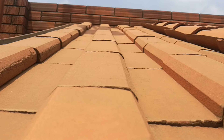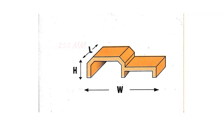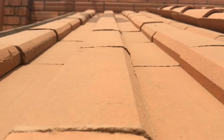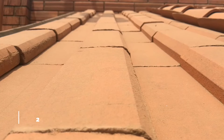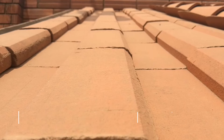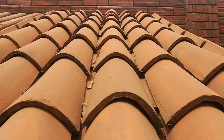The dimensions are 250 millimeters in length, 180 millimeters in width, and 50 millimeters in height. A single Slip tile weighs 1.2 kilograms and you will need 25 pieces to cover a square meter. The cost is 15 shillings per tile.